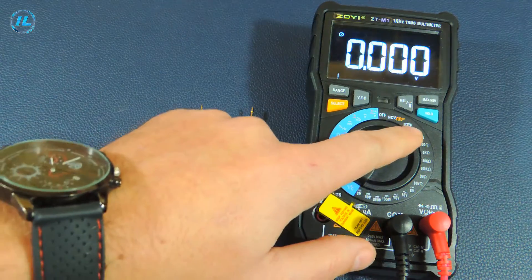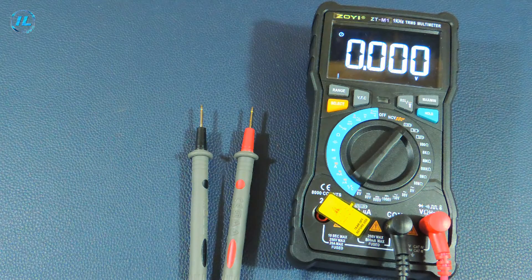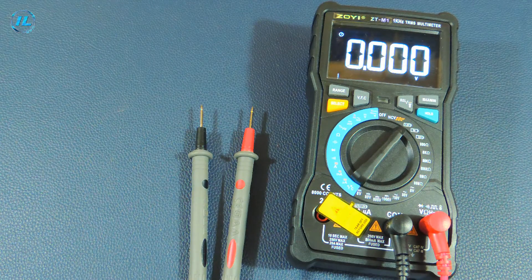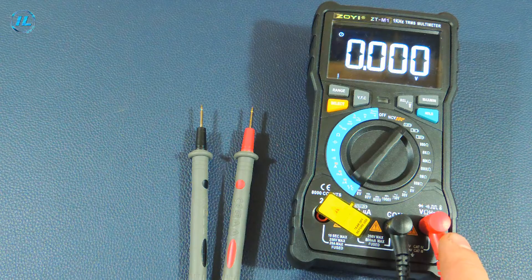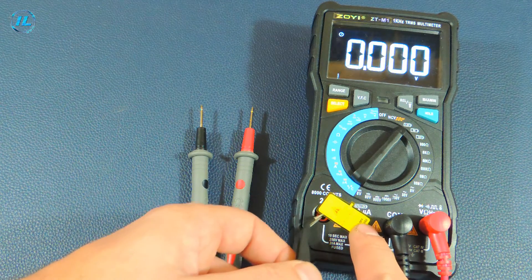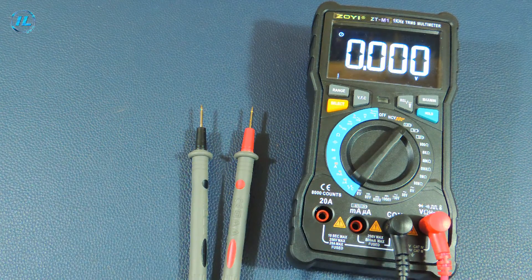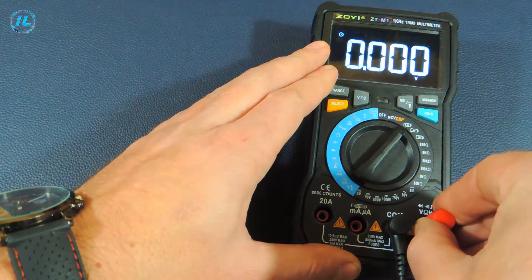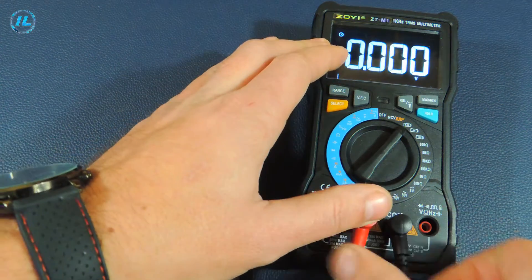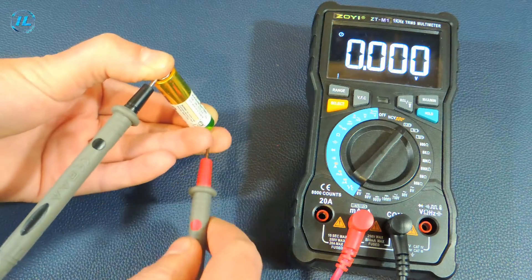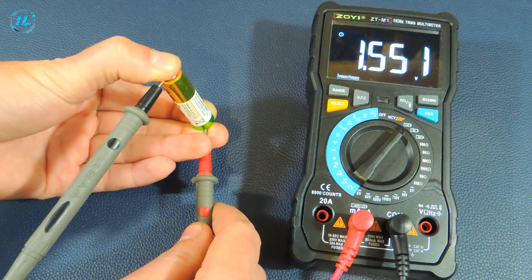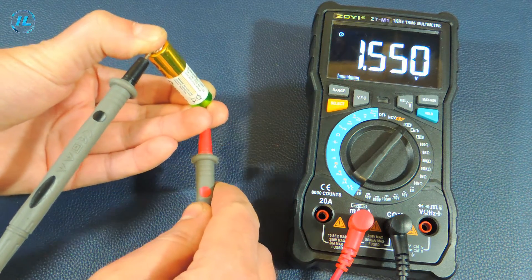The next three points are battery testing: 1.5 volts, 9 volts and 12 volts. To test the battery, the red probe needs to be moved into this socket. In this mode, the multimeter loads the battery. And the current strength during the test is 10 milliamps. The result is under a load of 1.55 volts.